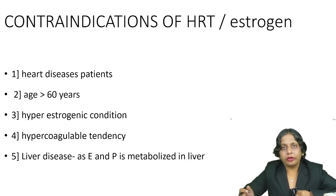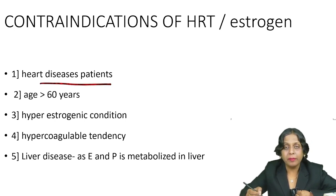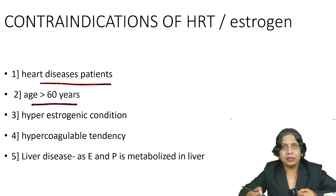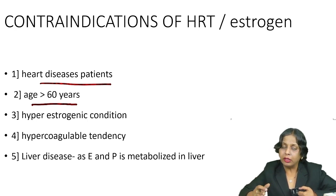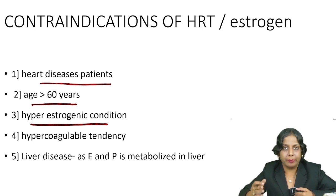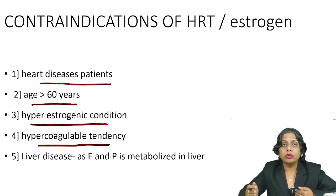The contraindications of HRT: first, heart diseases — if the patient already has heart disease, we will not give HRT. Second, age more than 60 years, because at increased age the patient is already at risk of heart diseases. Third, hyperestrogenic conditions — since HRT contains a lot of estrogen, we will not give it to a patient who already has any hyperestrogenic condition. Fourth, hypercoagulable tendency — estrogen even at normal doses increases clotting factors.